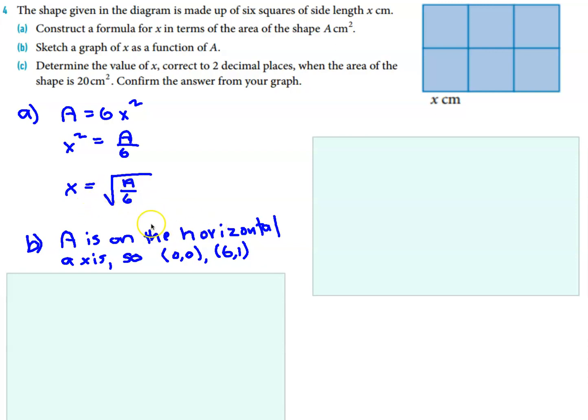So that gives us two values, two coordinates that lie on the graph, and there's my beautiful sketch just there. So it passes through 0, 0, and it also passes through the point 6, 1.